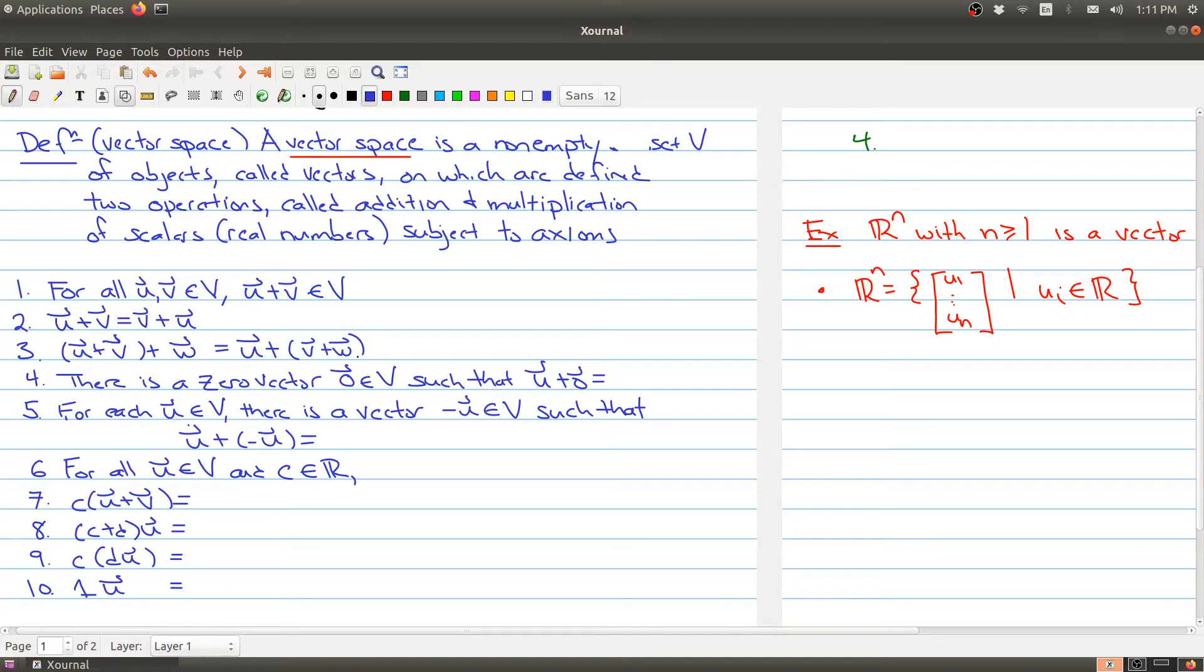Inside of your set V also has to be a special vector called a zero vector with the property that no matter what vector you add it to, you get back that vector back when you add it to zero.